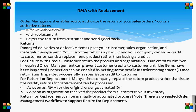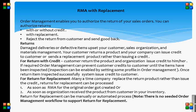For return with credit, the customer returns the product and the organization issues credit if required. Order management can prevent customer credit until the items have been inspected. Inspection can be enabled by setting some profile options in order management. Once the return item is inspected successfully, the system issues credit to the customer.